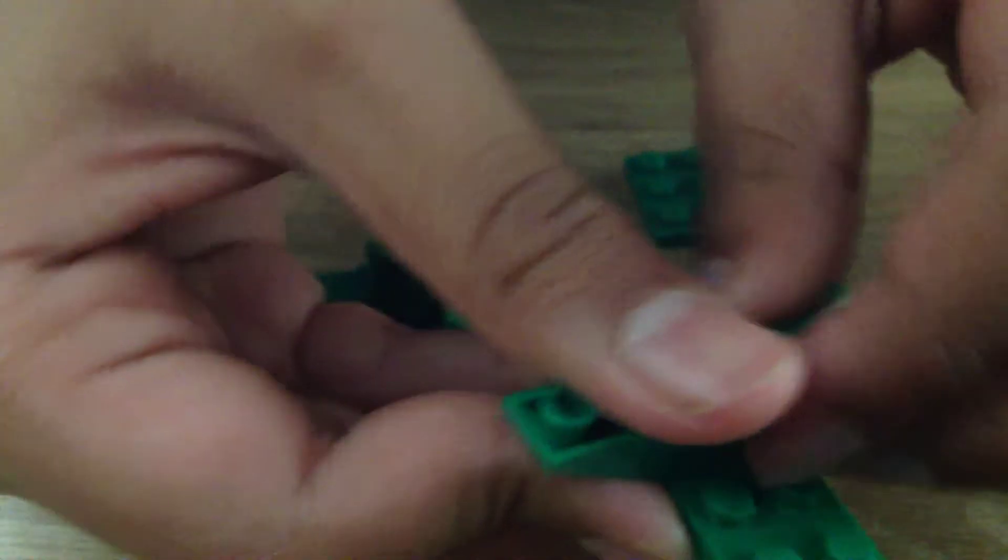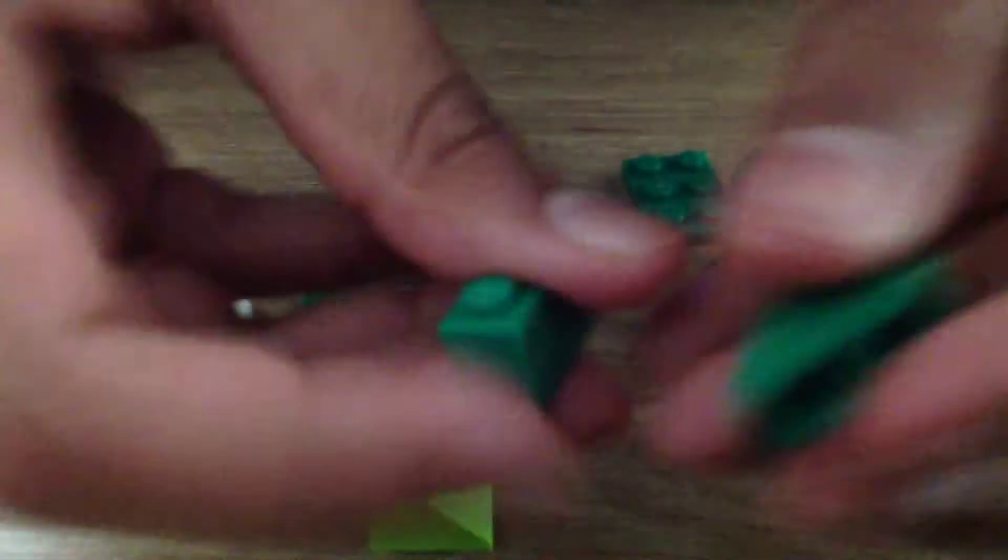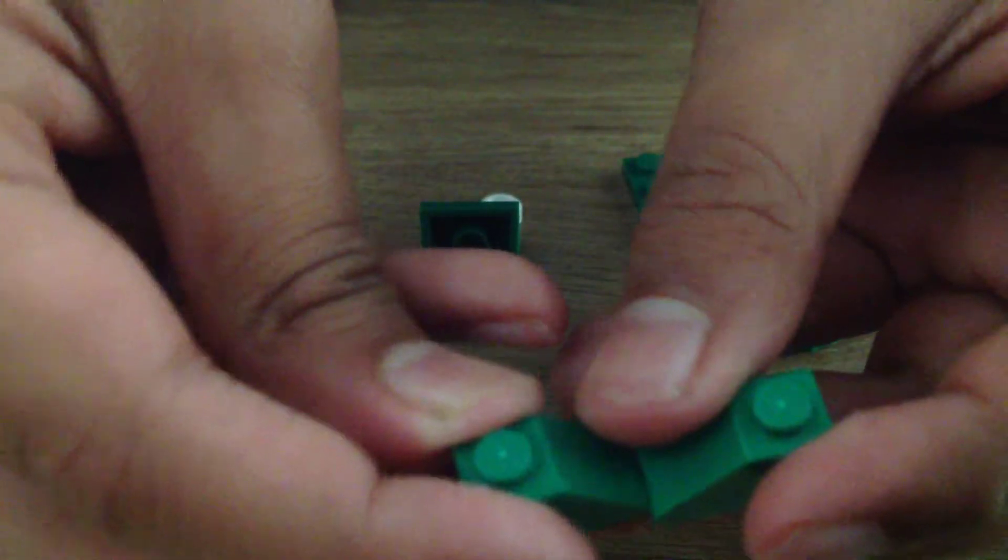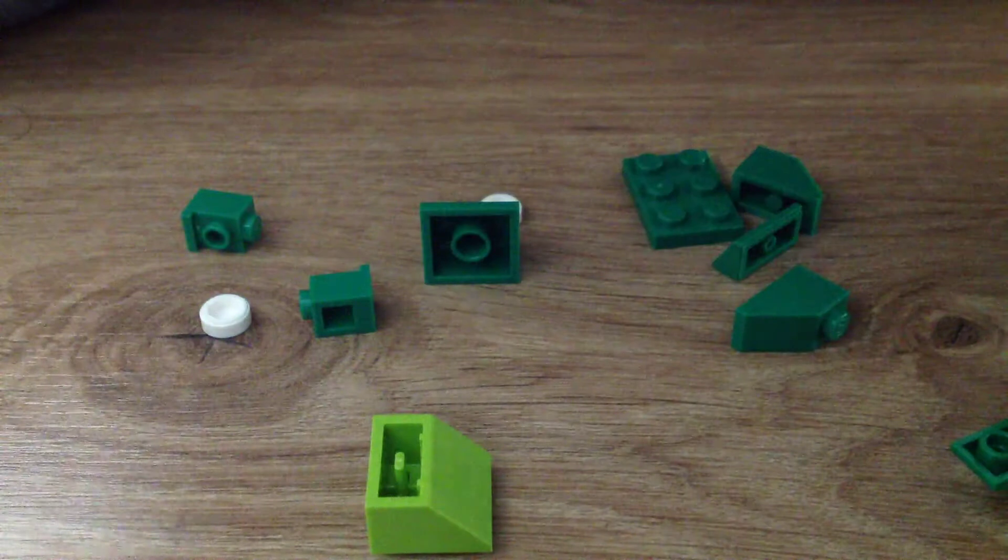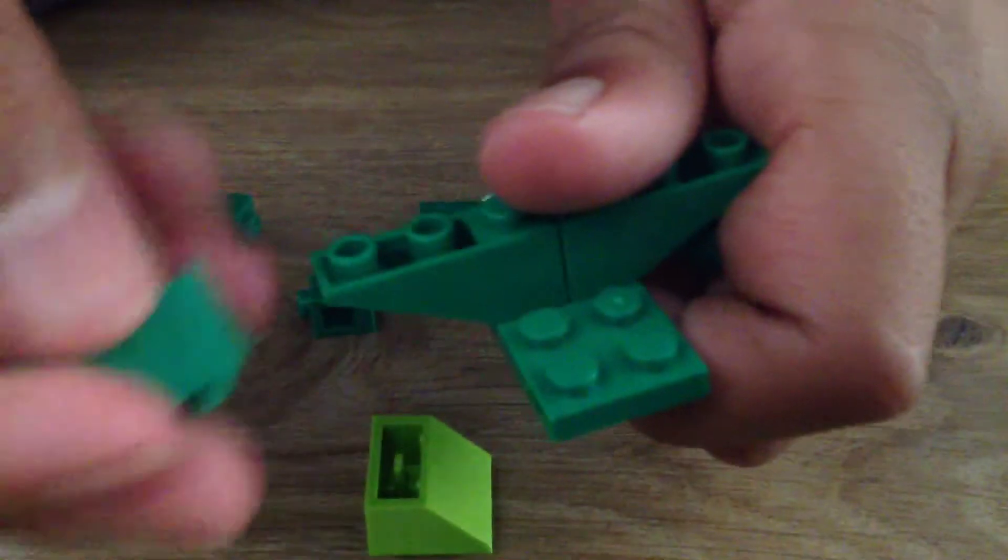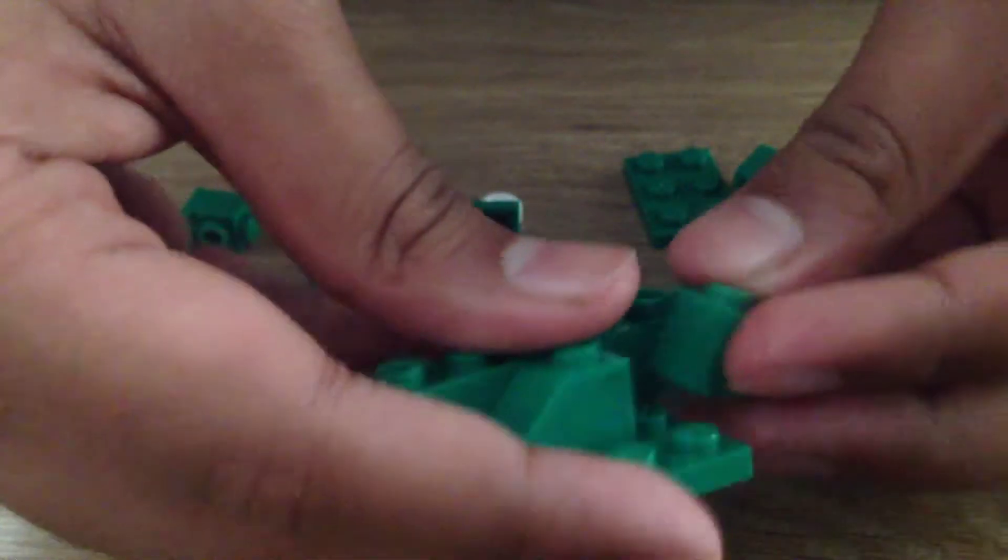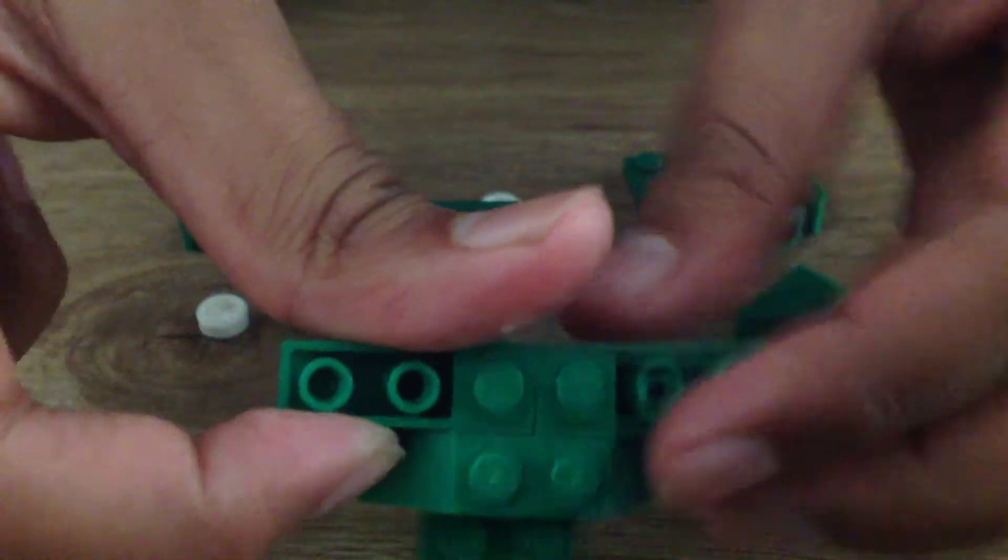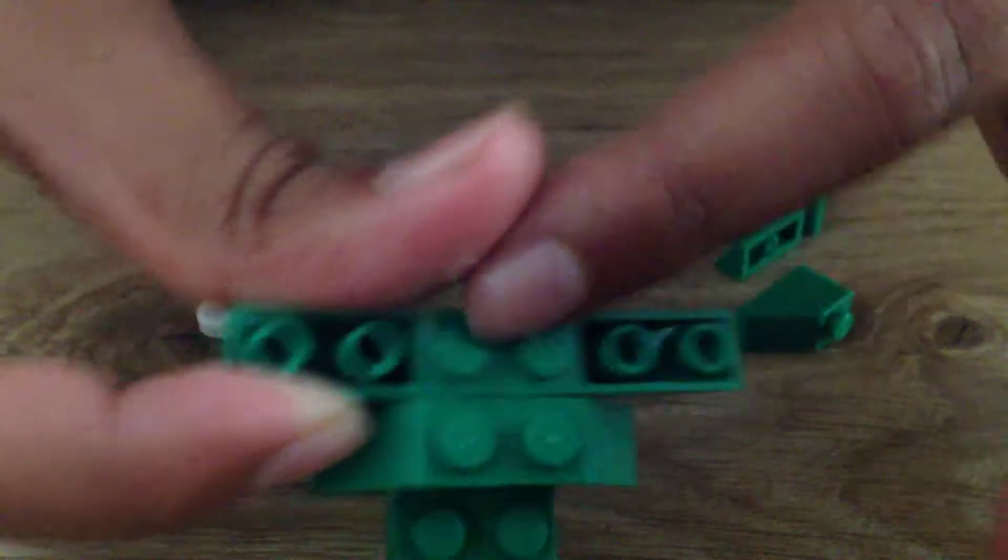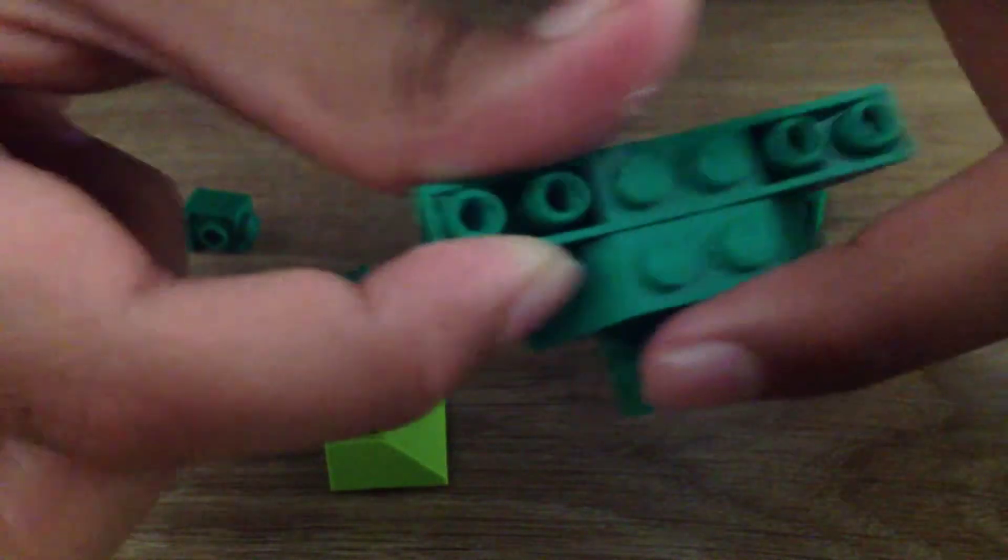Next, you're going to need these two pieces. Let's put them over here. There we go. You should have four like this, and then you still have this part empty.